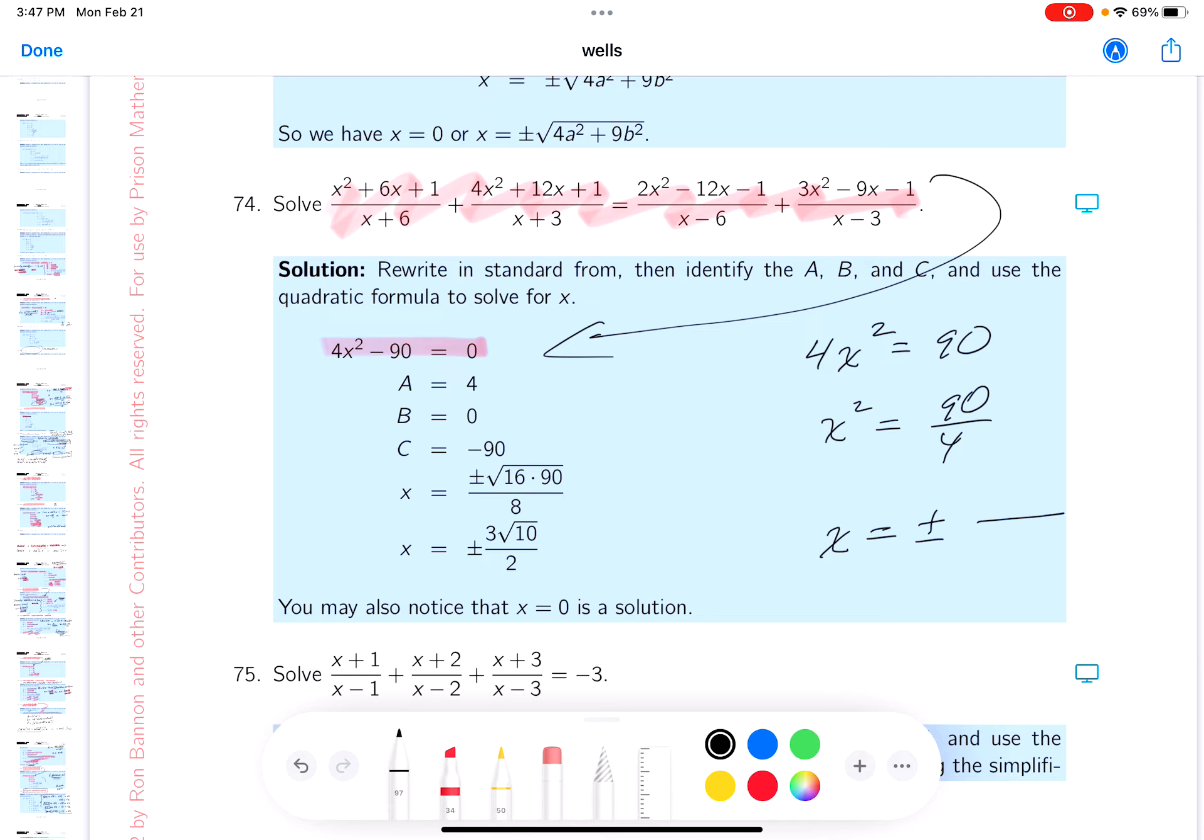That's going to be plus or minus, well the square root of 4 is 2, and then I got the 90 on top, so it's 9 times 10, square root of 9 is 3 root 10, and I'm done. That's my answer.